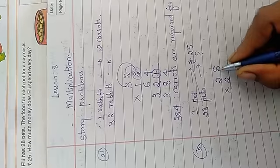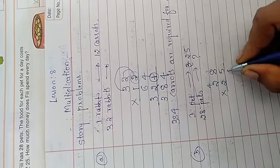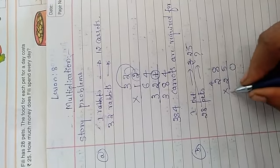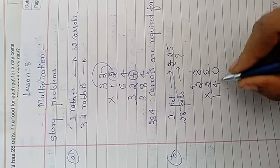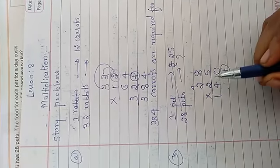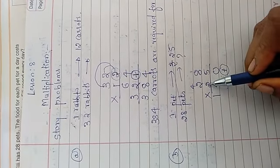Now 5, 8's are 40. 4 carry 0. 5, 2's are 10. 10 plus 4 is 14. Okay. Now, again I have to start from 2's are. So I will write here plus. Next, 2 I have to start from 2's are.